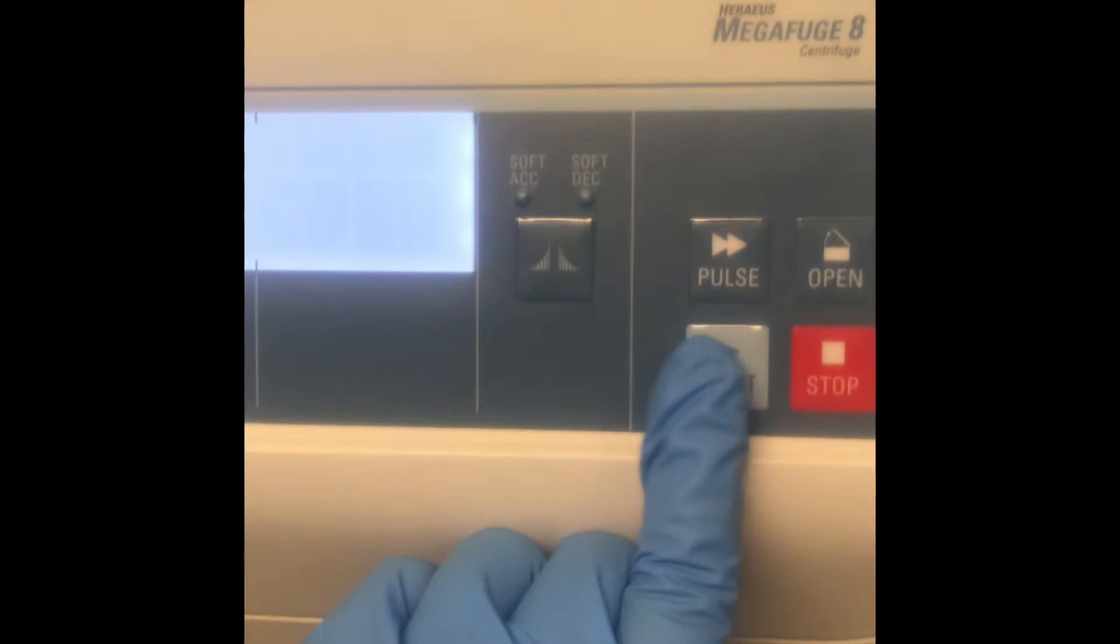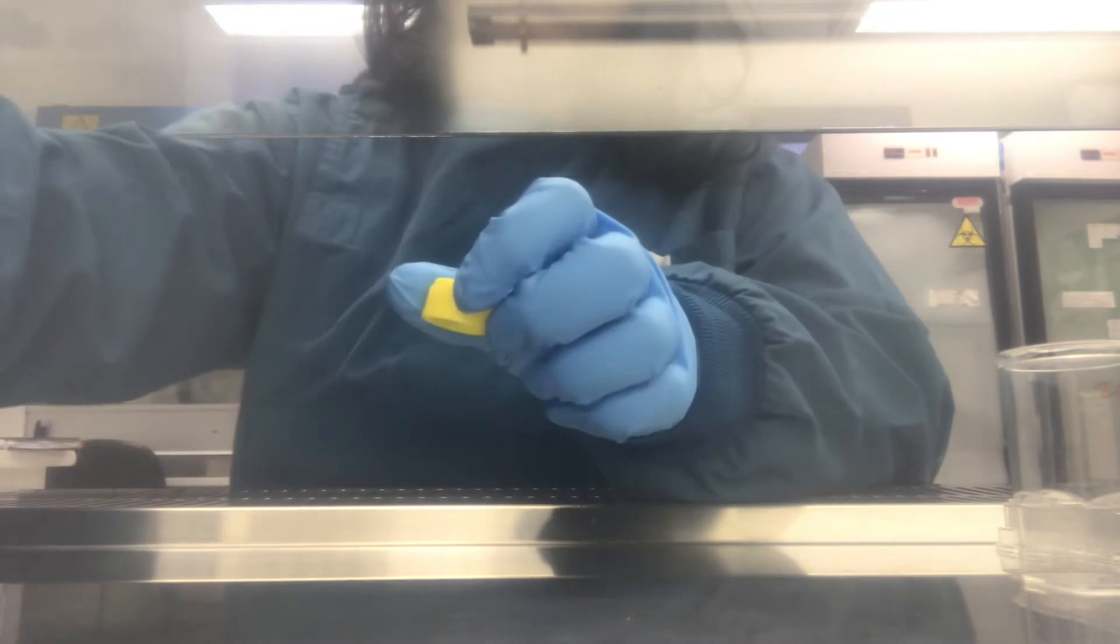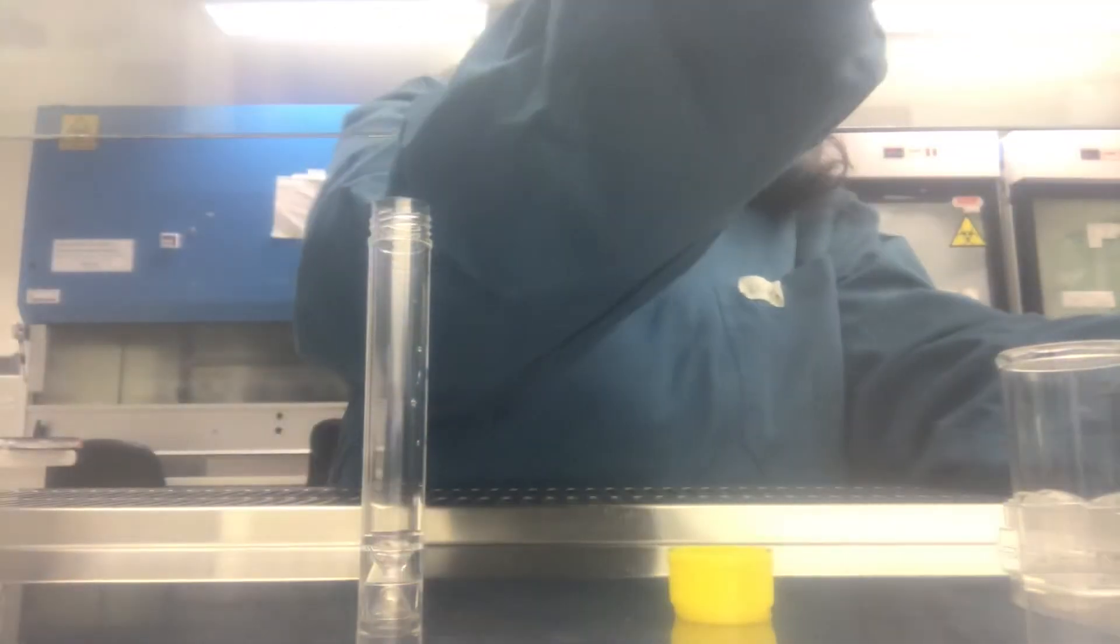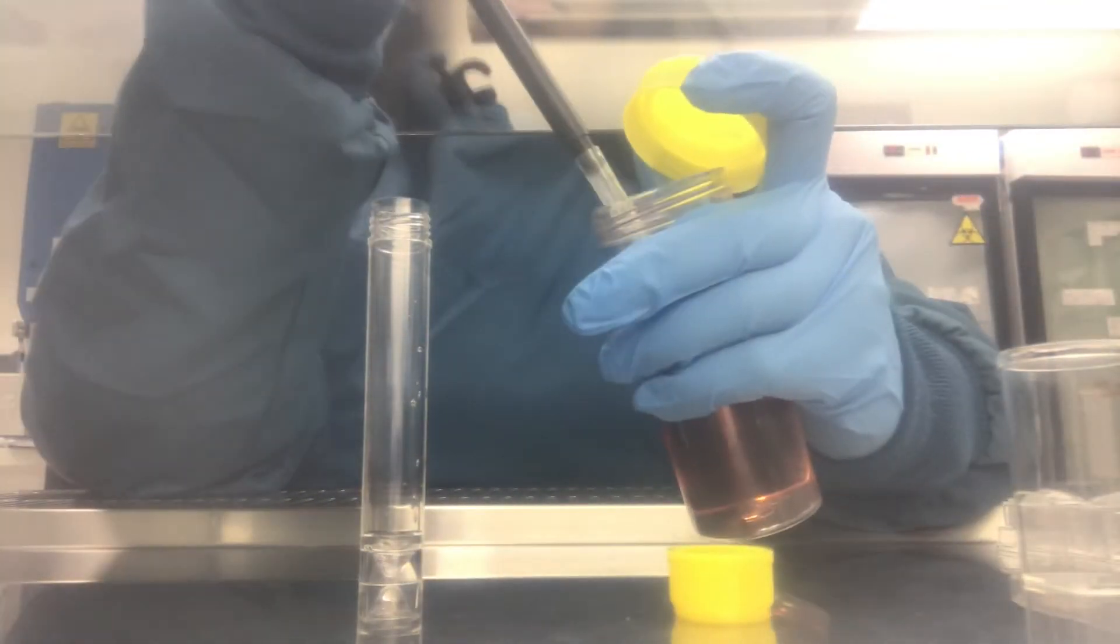Okay, once we got the pellet we have to discard the supernatant and then add fresh media. I'm just adding one ml, you can use according to the concentration that you need.